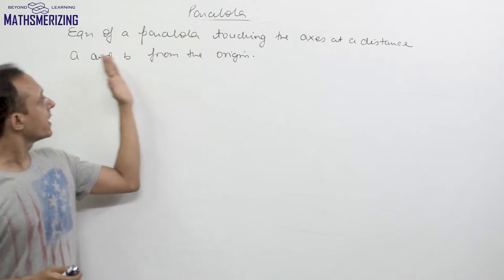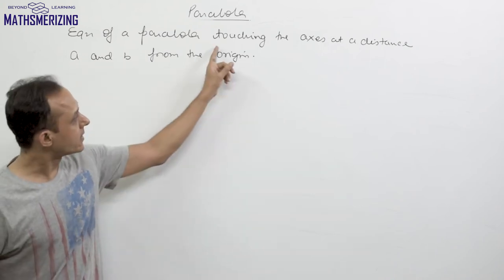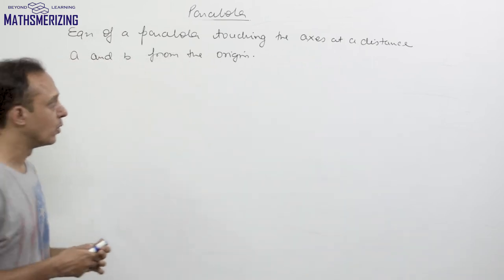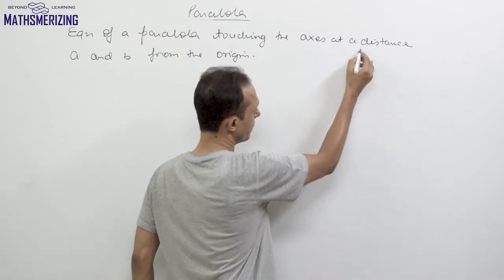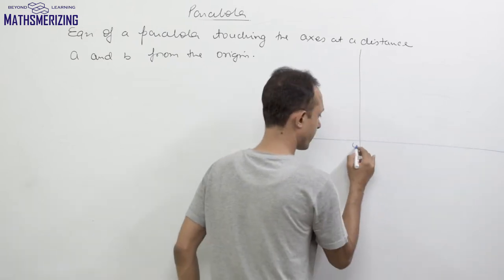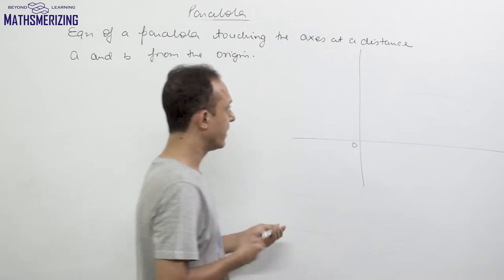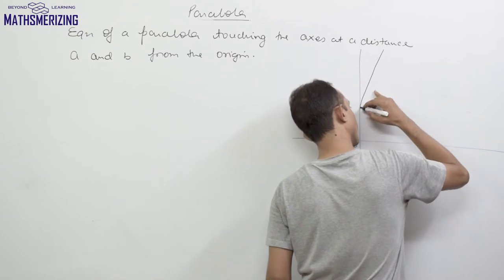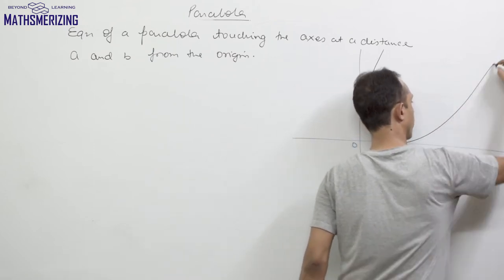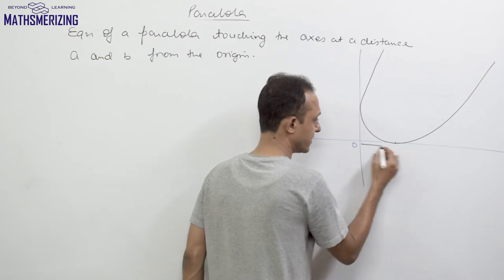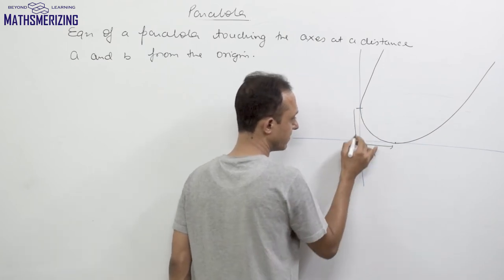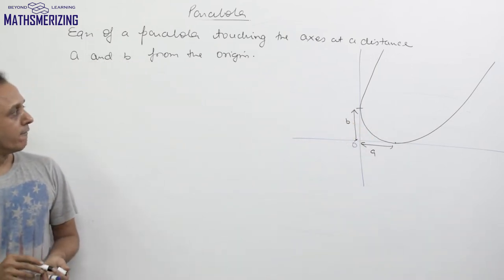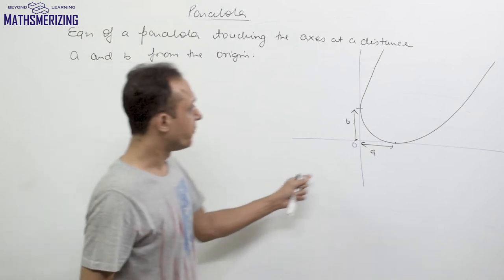In this video we will be discussing a very interesting equation of a parabola which touches both the axes at a distance of a and b units from the origin. Suppose this is the origin and we have this parabola which touches both axes at a distance a and at a distance b units from the origin. We need to find the equation of this parabola.